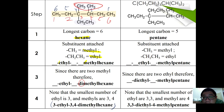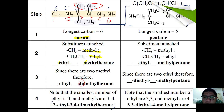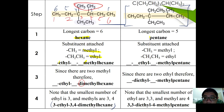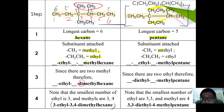When given a condensed formula, you must first expand the molecule to see its full structure. In this example, after expanding, the parent chain has five carbons — pentane. The substituents found are one methyl and two ethyl groups. According to alphabetical order, ethyl comes before methyl.